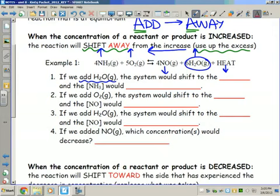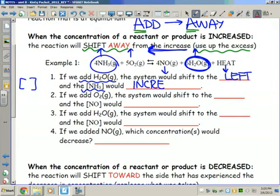To answer the question, if we add H2O, we found H2O on the right, the system will shift to the left. They're asking about the NH3 concentration. These brackets in this unit refer to concentration. The concentration of NH3, which is on the left side I've already indicated, would increase because the system is shifting to the left or toward reactants.